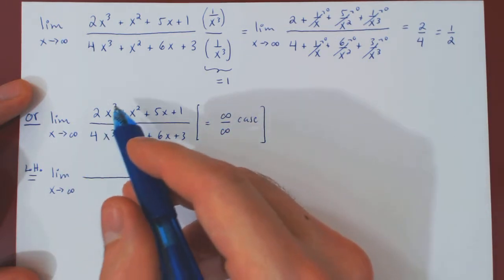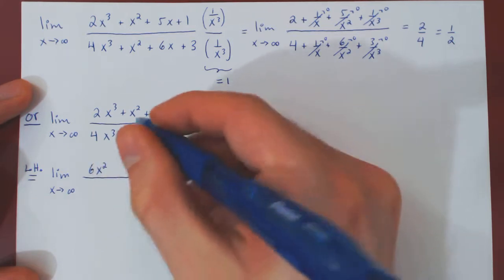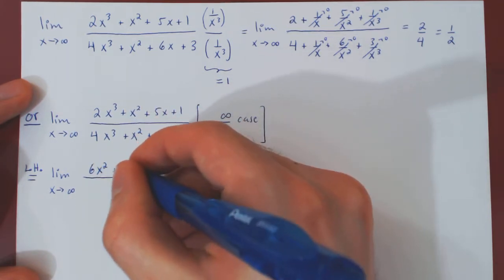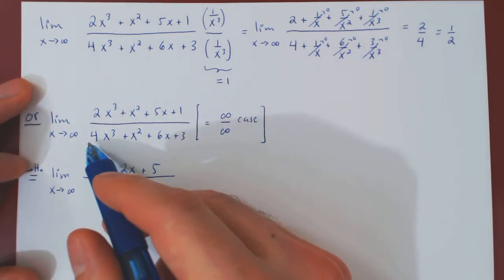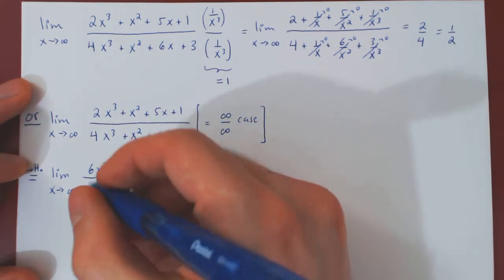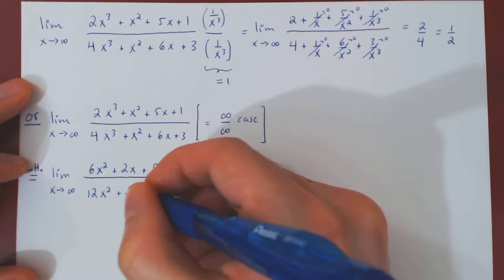The derivative of the numerator will be 6x² plus 2x plus 5, over the derivative of the denominator, which will be 12x² plus 2x plus 6.